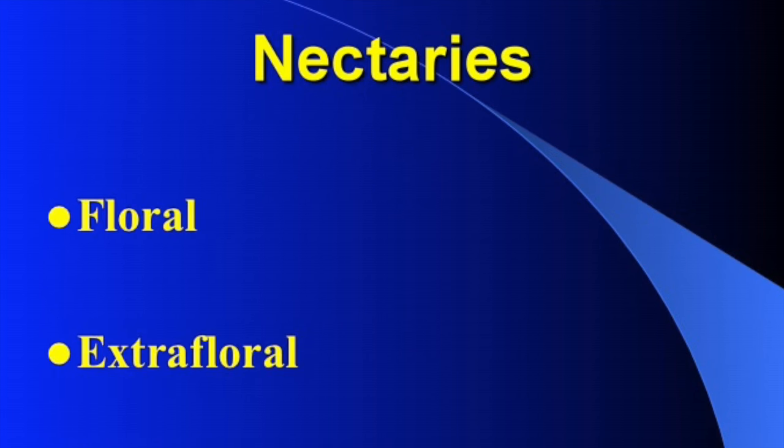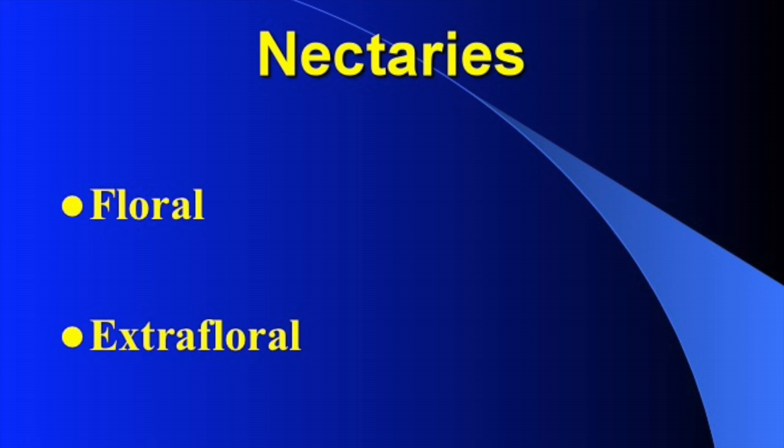We have two types of nectaries in the plant world. A nectary is the structure of the plant responsible for the secretion of nectar. We have floral nectaries — found somewhere within the flower — and extra-floral nectaries, found outside of the flower, maybe on the stems or leaf bracts. An example of a plant that has extra-floral nectaries is cotton, which also has flowers, so it has both floral and extra-floral nectaries. When cotton is not blooming, bees can still visit the plant and collect nectar from it.